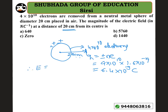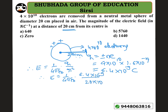The electric field due to a spherical shell is E = (1/4πε₀) × Q/r². So E = 9 × 10⁹ × (6.4 × 10⁻⁹) / (20 × 10⁻² )². Substituting the values, you get the answer as 1440 Newton per coulomb. That's why option D is the right answer for this question.